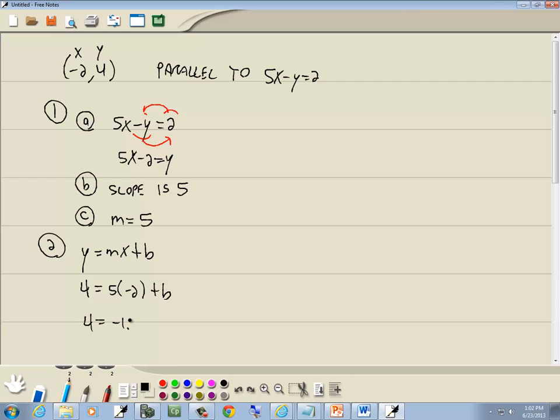5 times negative 2 is negative 10. Take the negative 10 to the left side, becomes a positive 10. And we get b is equal to 14.